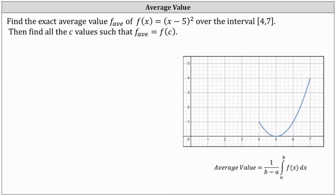We're asked to find the exact average value of f(x) = (x-5)² over the closed interval from four to seven. The average value of a function over the closed interval from a to b is equal to one divided by the quantity b minus a, times the definite integral from a to b of f(x) dx.